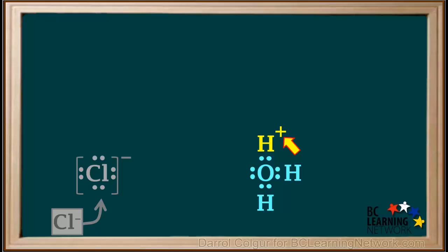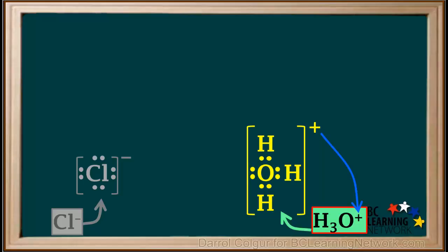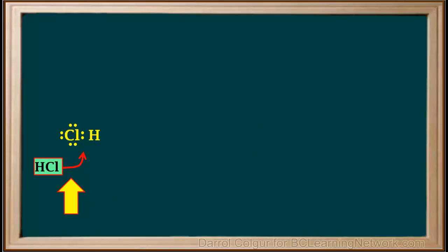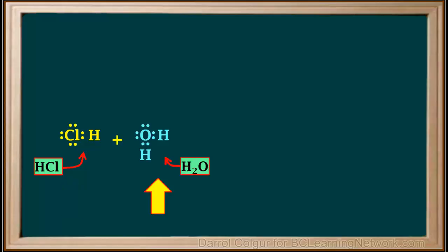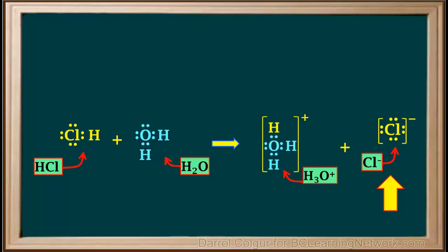The positive charge is considered as the charge of the whole ion. There are now three H atoms attached to one O, so the formula is H3O+. Chemists call the H3O+ ion the hydronium ion. So we started with HCl and added water, which gave us an H3O+, or hydronium ion, plus a Cl-, or chloride ion.